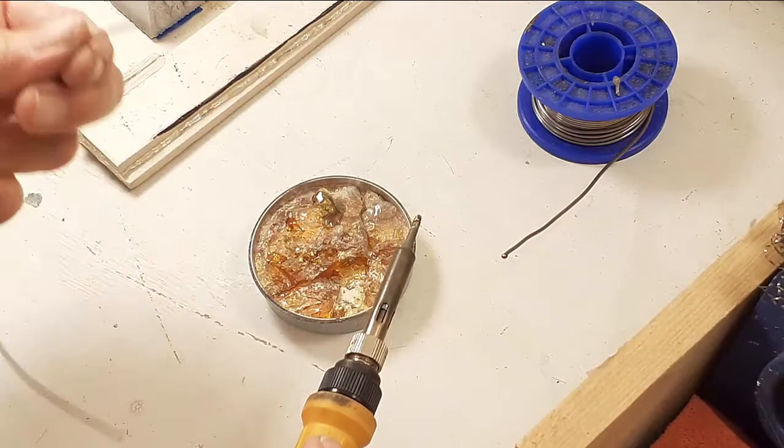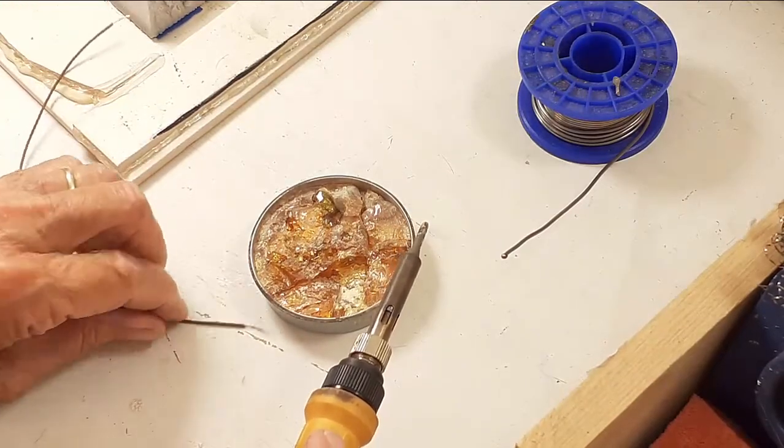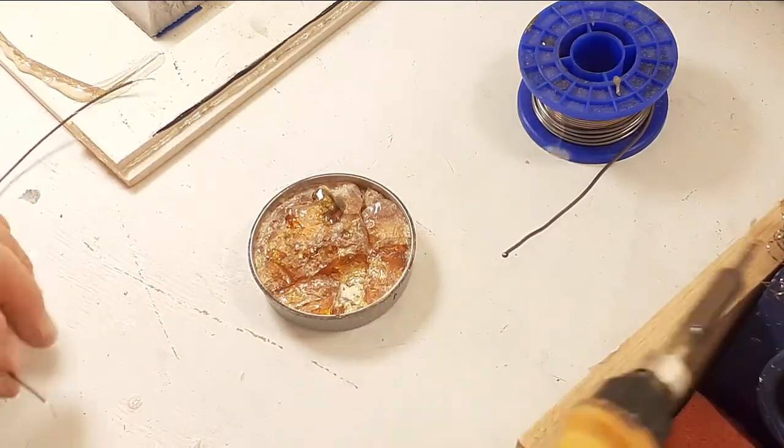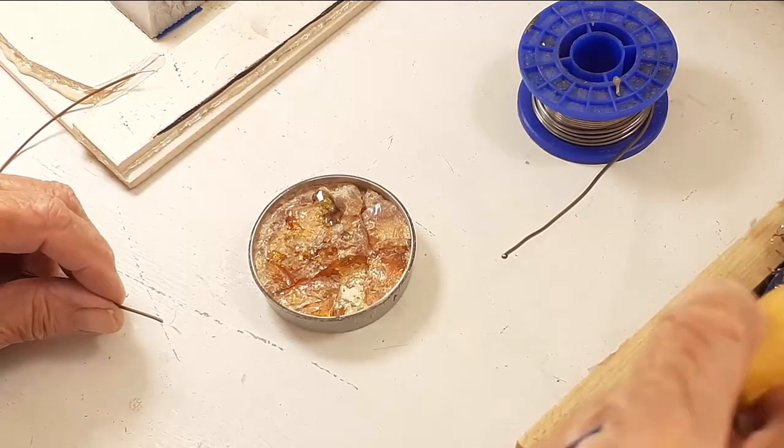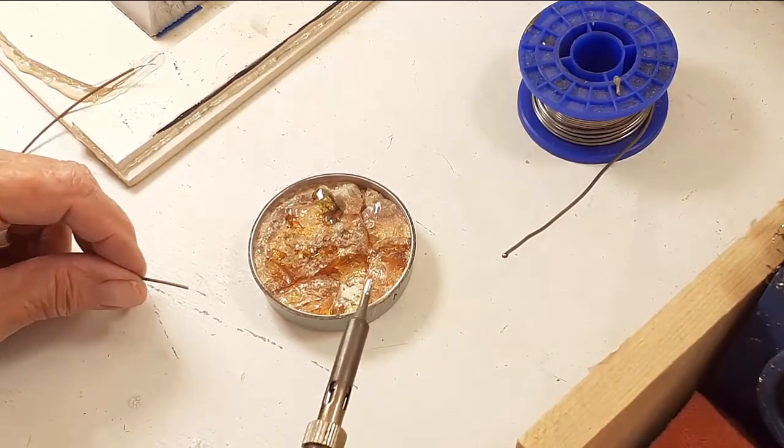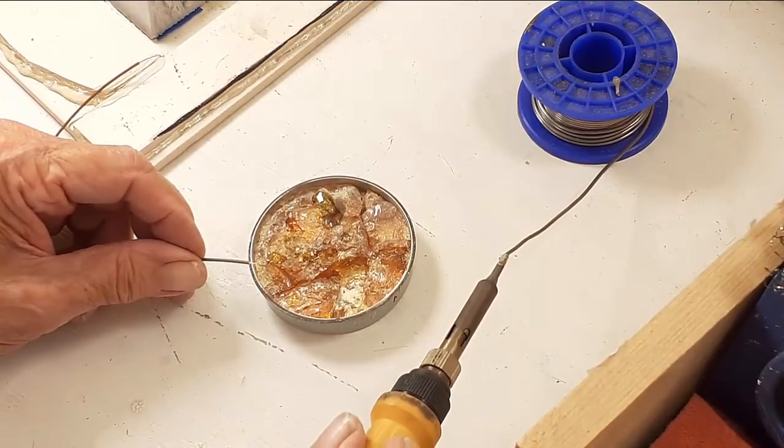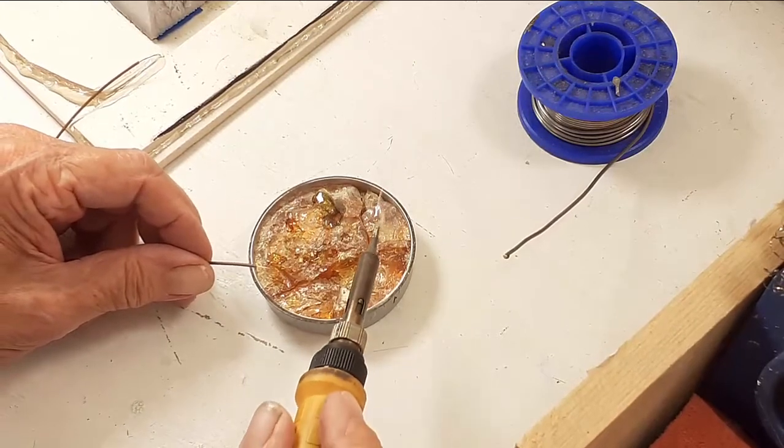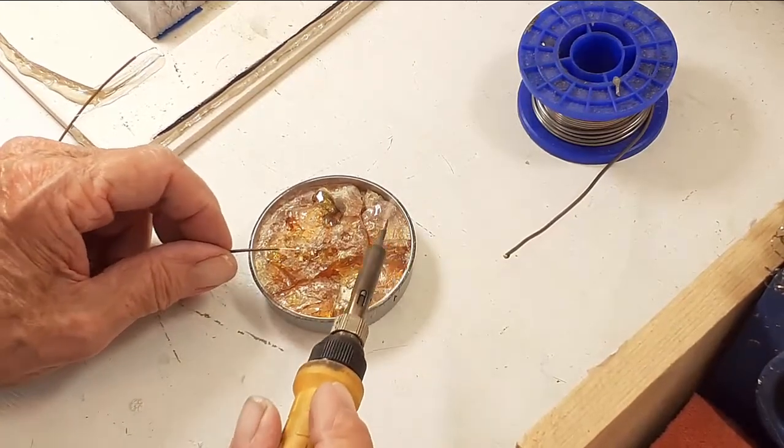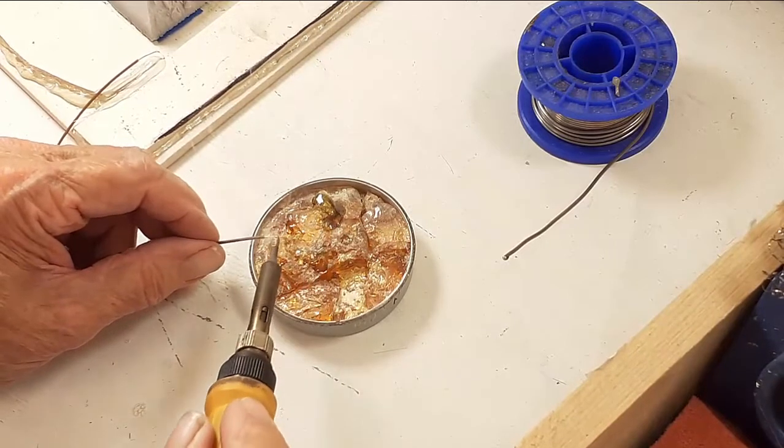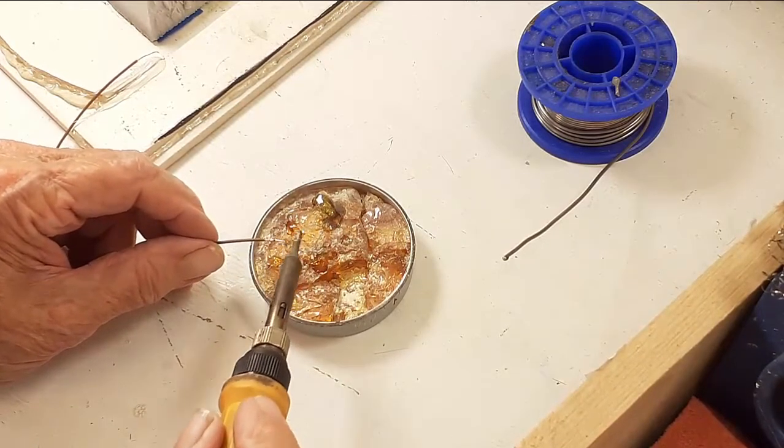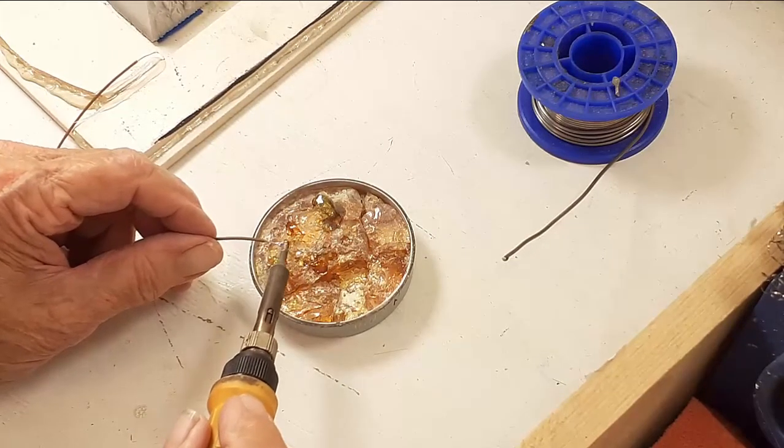Another way to do this is to first put some solder on the tip of your iron. I'm cleaning the iron tip off. Put some solder on the tip of your iron, and then touch that in the flux. And then you can go ahead and tin the tip of a wire. That is another way to do it.